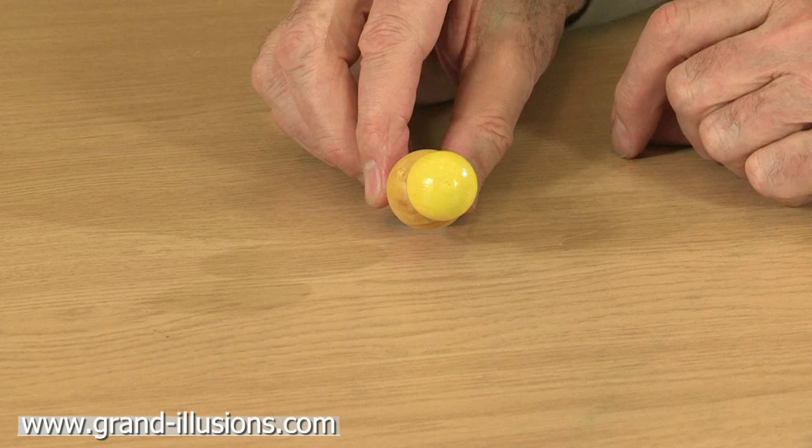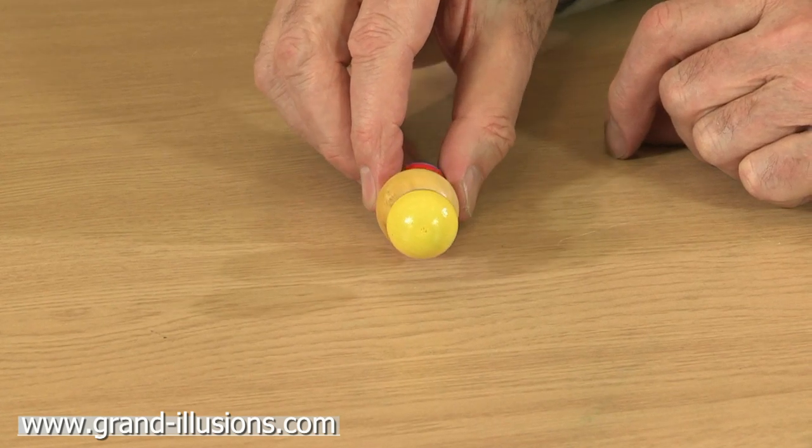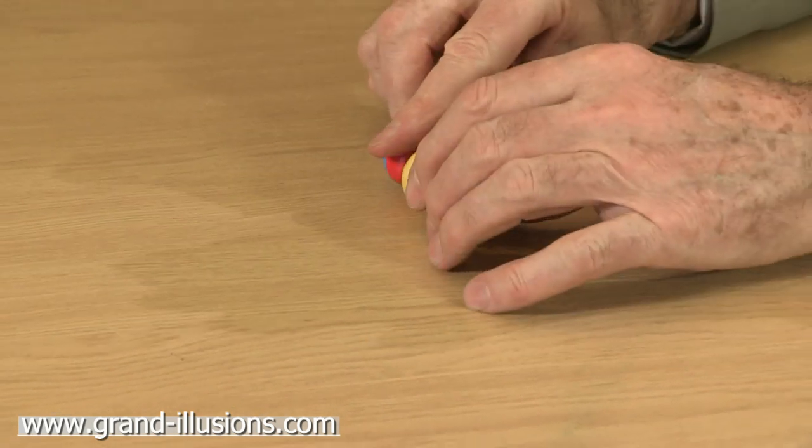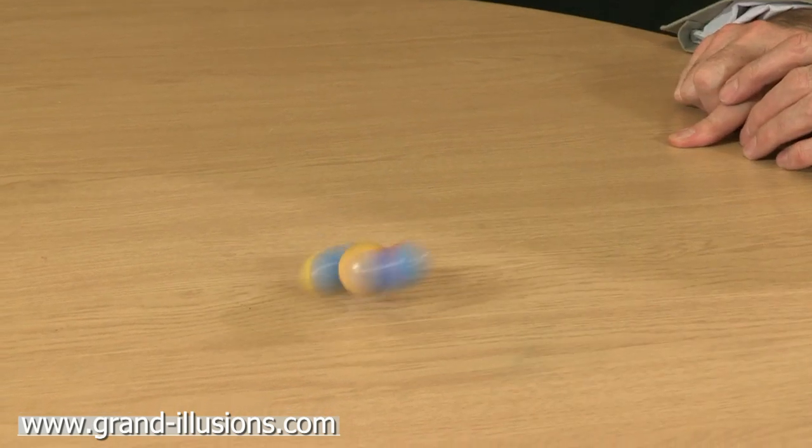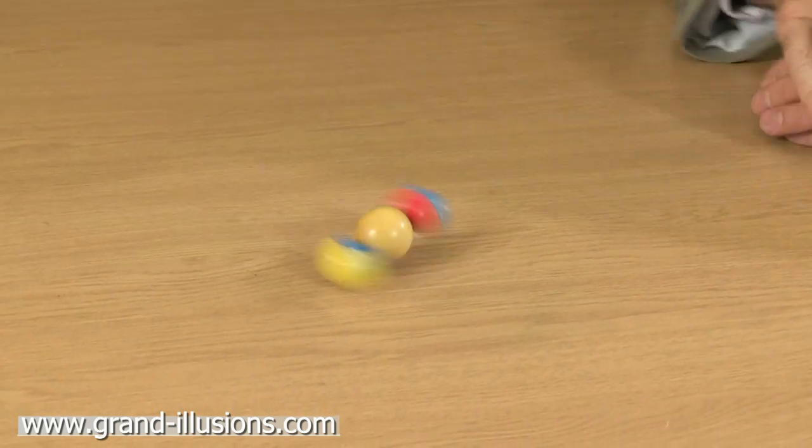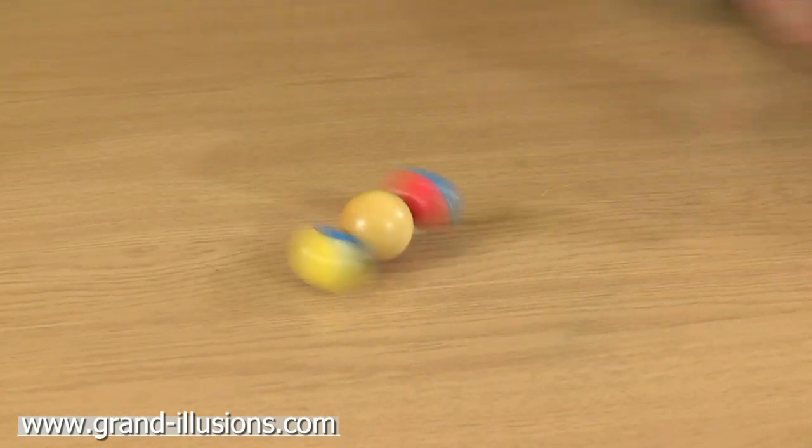When it starts to spin, it's about that angle there, and it slowly sinks down. Now the large sphere is touching the table.